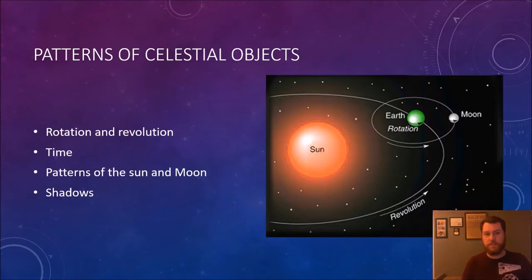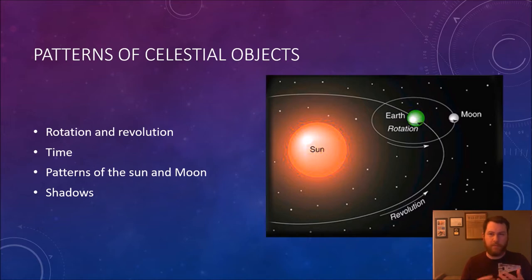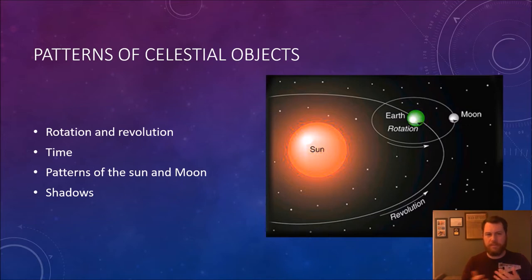As we watch this first video clip, pay attention to the difference between rotation and revolution, and what that has to do with how the Earth and moon move. Think about the concept of time — where do we get a year, where do we get a day, and what determines them? Also consider what patterns of the sun and moon we can observe, and what information shadows give us.